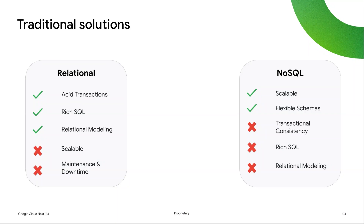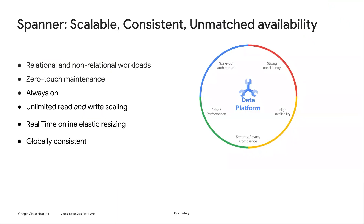For example, NoSQL databases lack transactional consistency, come with no or very limited SQL support, and lack rich ecosystem types, functions, and schema-enabled modeling functionality. Spanner is a database that provides the best of all these worlds — NoSQL scale, flexibility, and performance with the power and functionality of a traditional RDBMS.